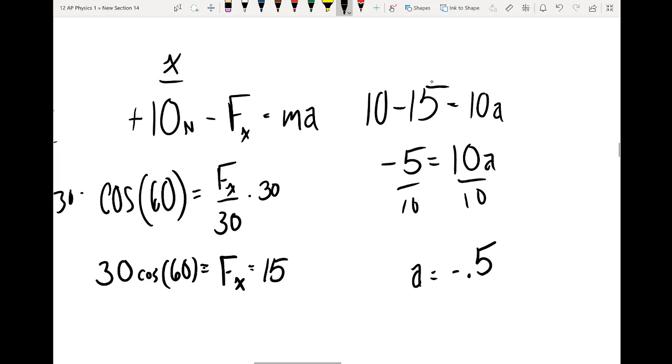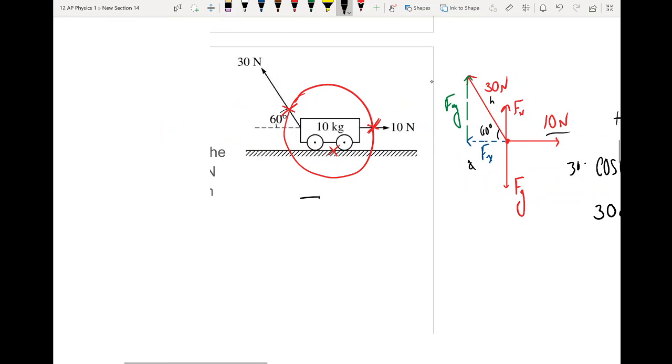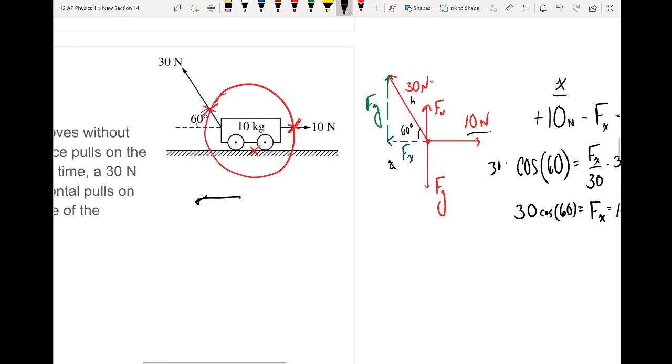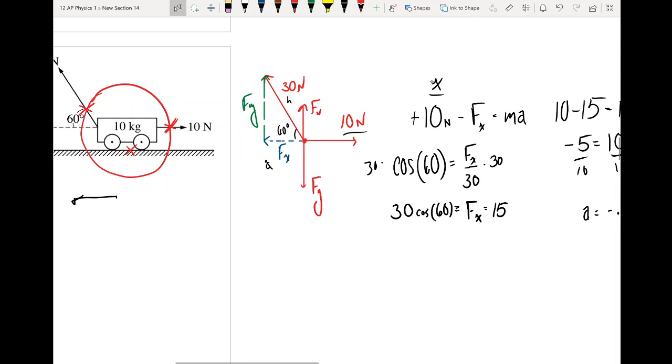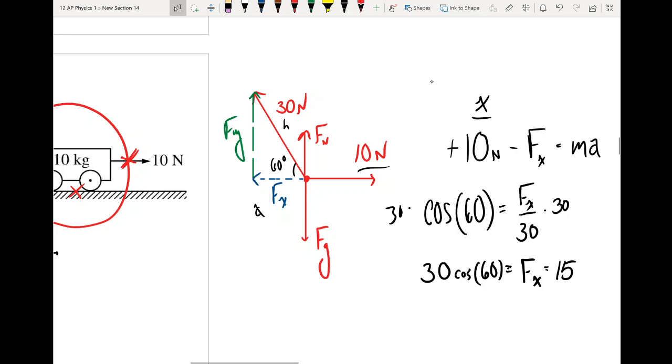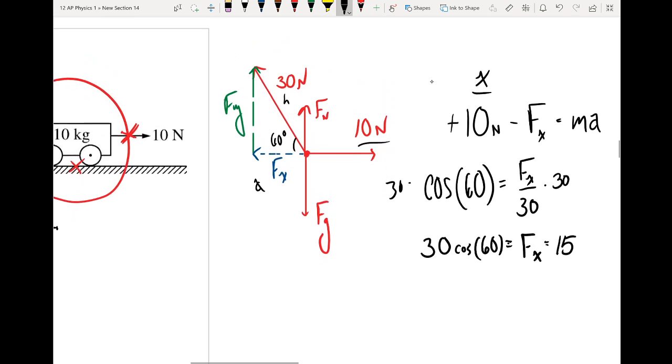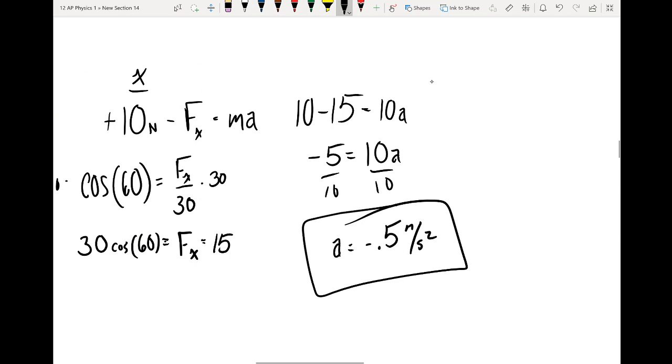So in this case, our cart is accelerating to the left. It is gaining speed to the left. So if it's already moving this way, it's slowing down, or it's starting to speed up in our leftwards direction. Alright, cool. And then one thing to kind of point out with this one, I don't have a direct question about it today, but if we were going to solve for this normal force, the normal force would be less than the weight, and that's just kind of a cool thing to think about. But yeah, so we found our acceleration and we're good to go.